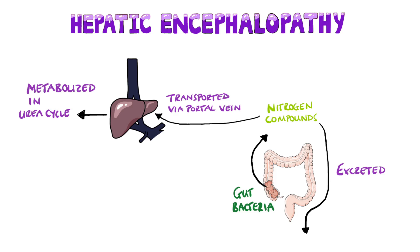In patients with cirrhosis, however, the hepatocytes are not functioning properly and are less capable of metabolizing the waste products. You may also have shunts forming due to the increase in portal pressure, or medically constructed shunts known as TIPS, which allows blood to move from the portal system into the inferior vena cava. The problem is that this blood still contains the nitrogenous compounds.